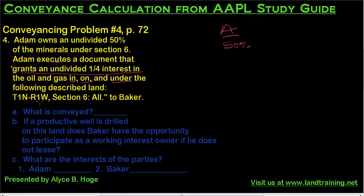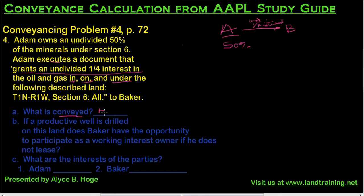Township one north, range one west, section six — all to Baker. So Adam is conveying to Baker an undivided one quarter interest. The first question is: what is being conveyed — a mineral interest or a royalty interest? A royalty interest would say 'produced and saved.' This says 'in, on, and under.' That's our indication that this is an actual sale of minerals.